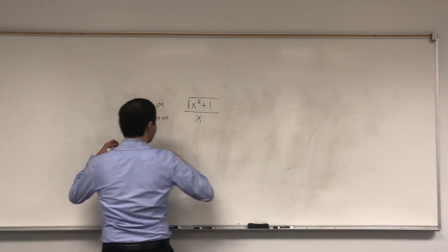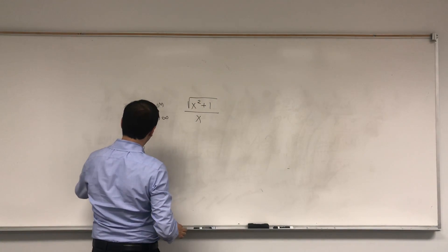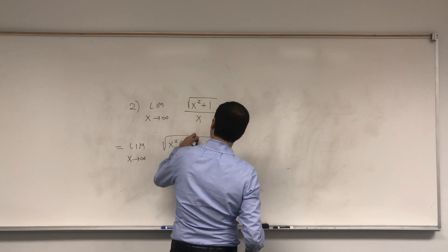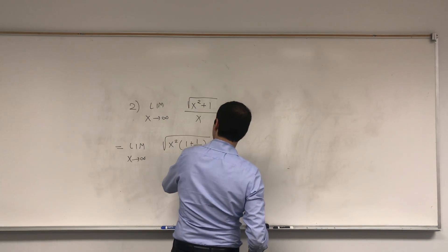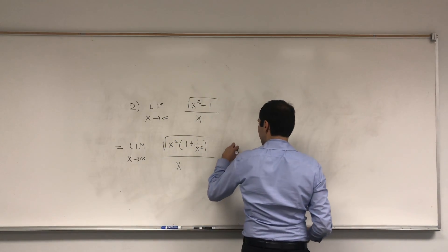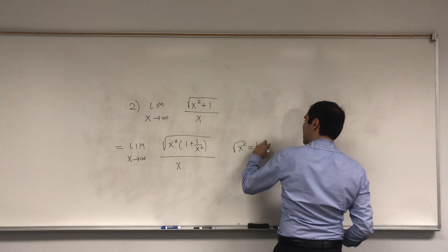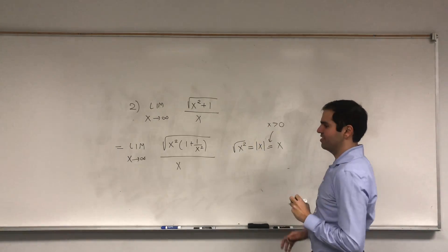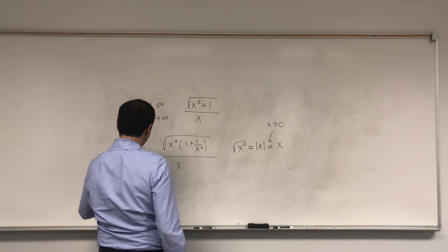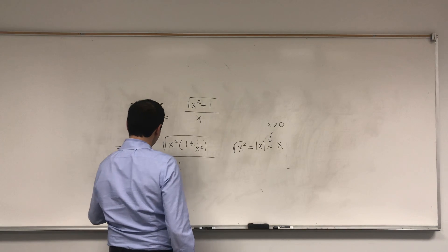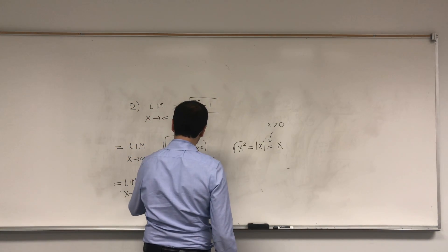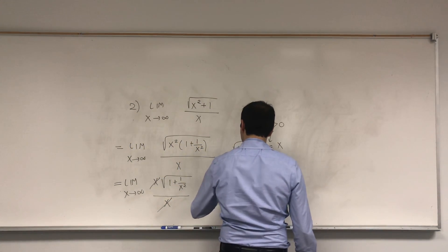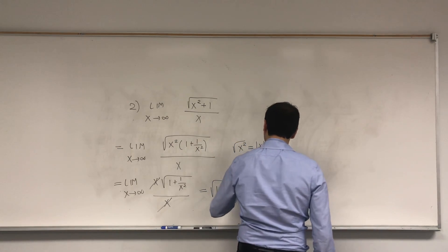So, that's very standard. If you have a square root, you just factor out x squared from the square root. So, square root of x squared, 1 plus 1 over x squared, and then over x. And now, remember, square root of x squared, in general, is absolute value of x. But since x is positive, that's just x. And so, what we're left with is the limit as x goes to infinity of x times square root of 1 plus 1 over x squared, over x. This cancels out, and we get square root of 1 plus 0, which is just 1.